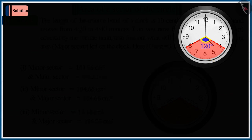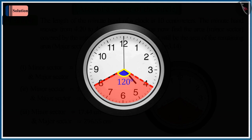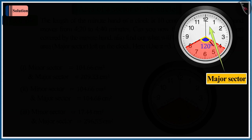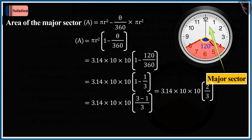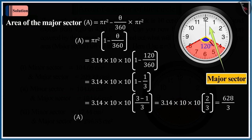We see that, apart from minor sector, we have the area of major sector left. Let A be the area of the major sector. To determine the value of which, from the area of the whole circle, the area of minor sector is subtracted. On solving this, the value of A found to be 209.33 square centimeters.